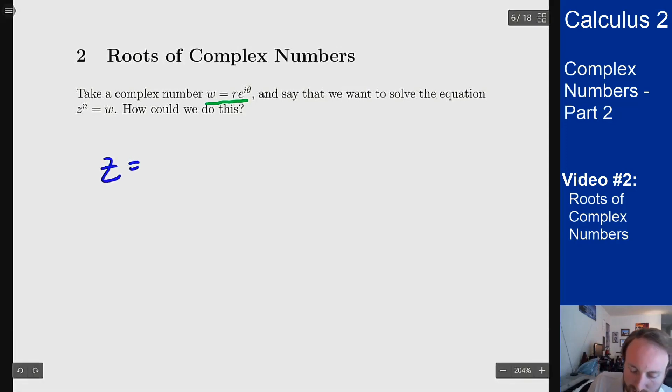So if z, our answer, is going to be s times e to the i phi for another complex number of that form, well we know what z to the n is. We know that z to the n is going to be s to the n times e to the i n phi. That's how powers of complex numbers work in polar form.